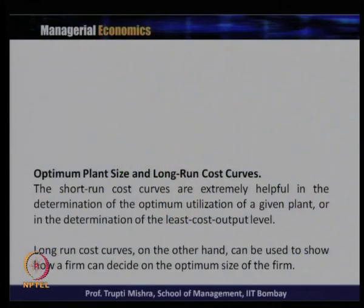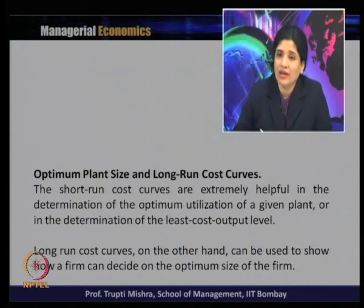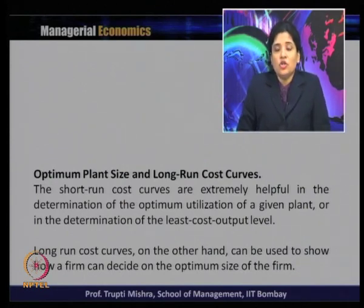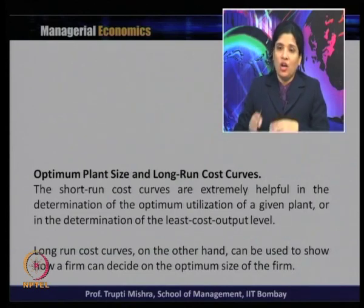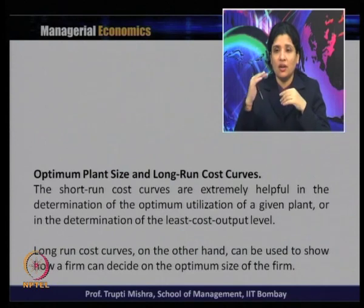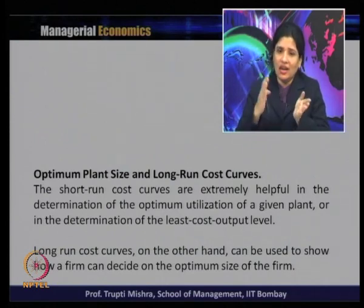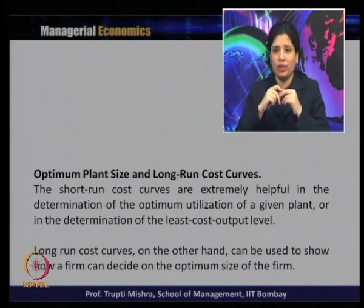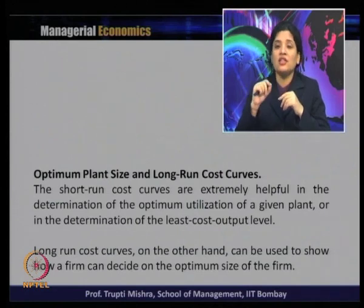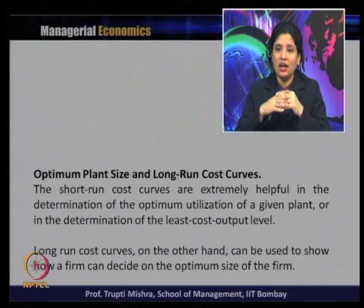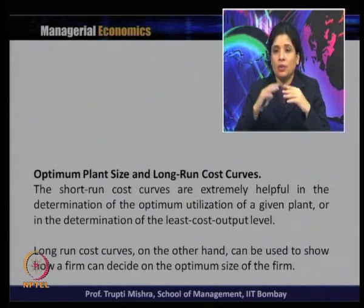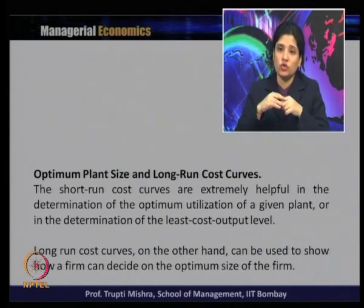We will now discuss optimum plant size and how it can be achieved using the long run cost curve. Short-run cost curves are helpful in determining optimum utilization of a given plant. If the plant size is 500 units, the short-run cost curve helps identify the optimum utilization, including the right input mix. In the short run, with fixed inputs and output changeable only through variable inputs, the short-run curve helps determine optimum utilization and the least-cost output level.